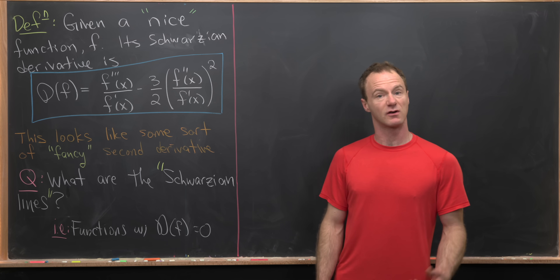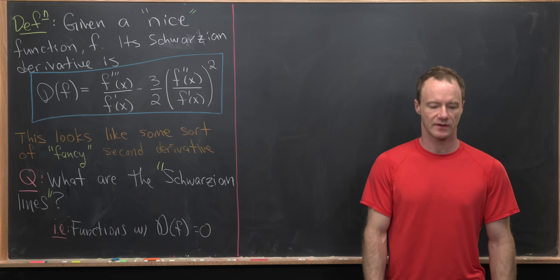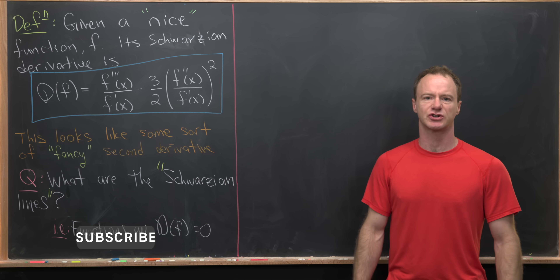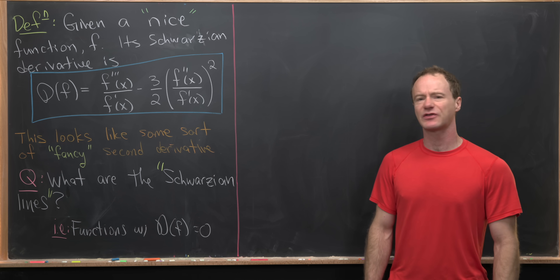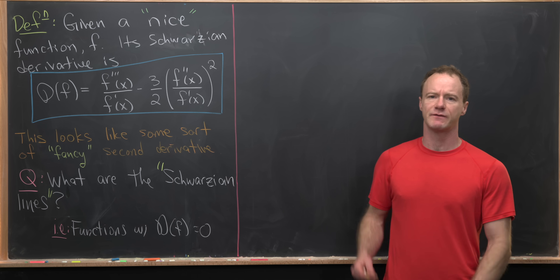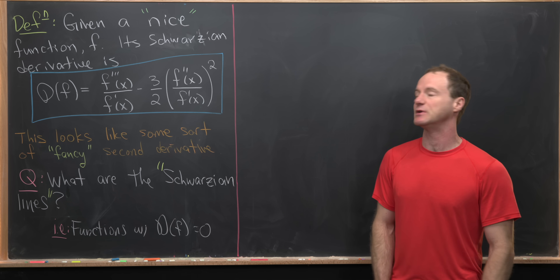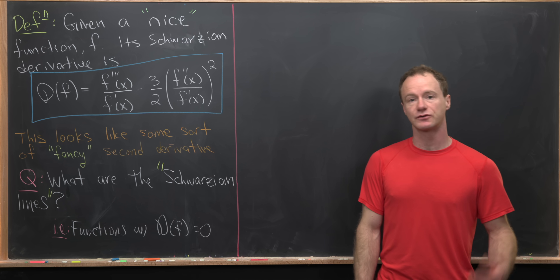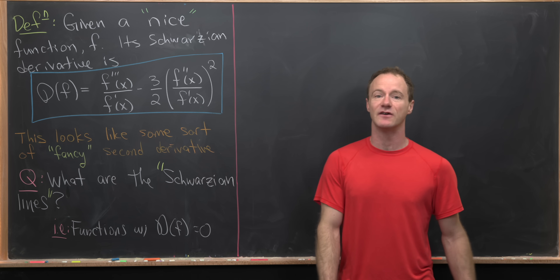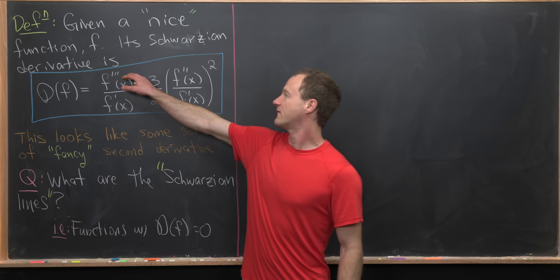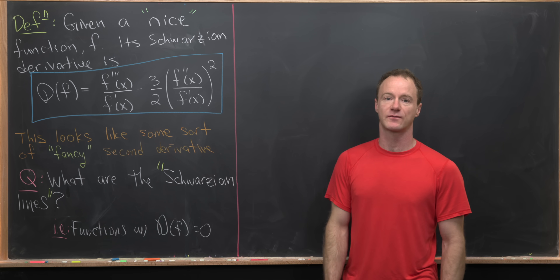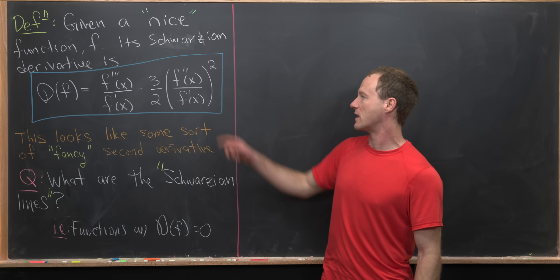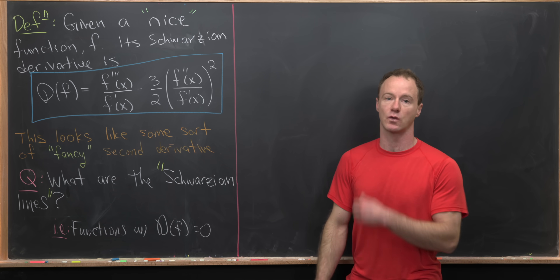Here we're going to look at an interesting operator on a function called the Schwarzian derivative. We want to start with something I'll call a nice function — it needs to be three times differentiable and the first derivative can't be zero for this to be well defined. We can define the Schwarzian derivative, written as script D of f, as f triple prime of x over f prime of x minus three halves times f double prime of x over f prime of x, quantity squared.